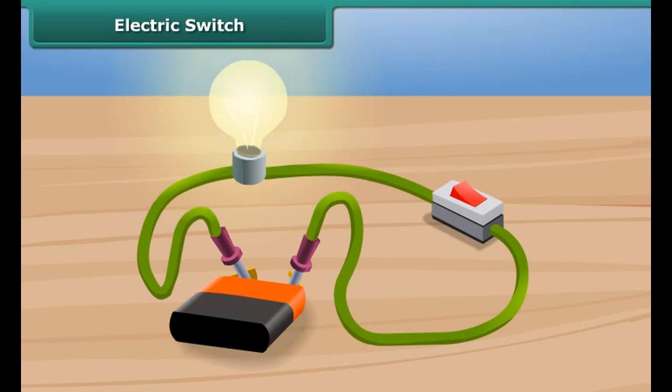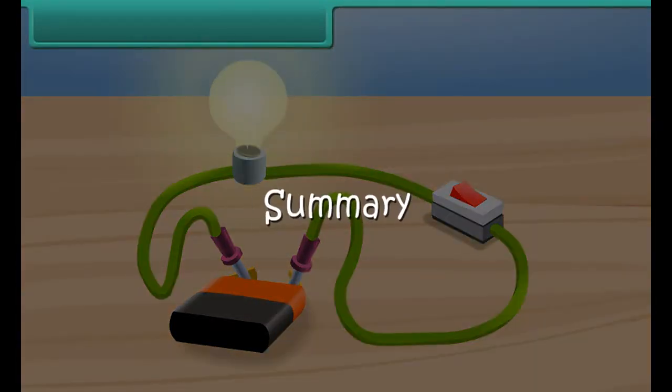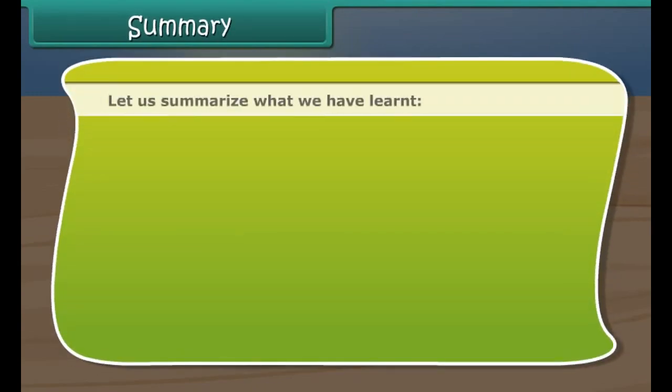The current does not flow through the circuit. When we press the other end of the strip on the switch, it gets connected to close the circuit. The current flows through the circuit and the bulb starts glowing. A switch is a device to close or open a circuit.